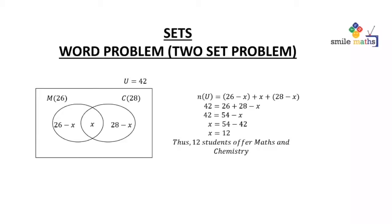26 plus 28 gives us 54. So when we move x to the left side and move 42 to the right side, we have x is equal to 54 minus 42. Therefore, x is equal to 12.